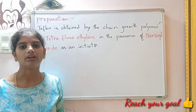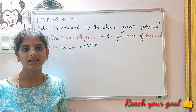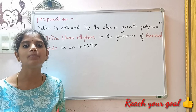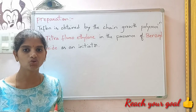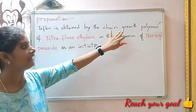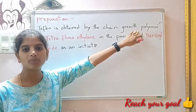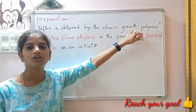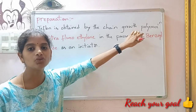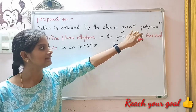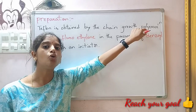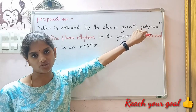Preparation of Teflon: Teflon is obtained by chain growth polymerization of tetrafluoroethylene in the presence of benzoyl peroxide, which is used as an initiator. Chain growth polymerization means the addition of monomers without loss of any small molecules to form a large molecule. Chain growth polymerization is also called addition polymerization.